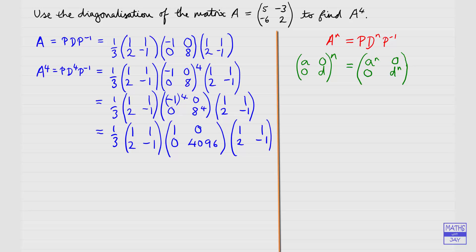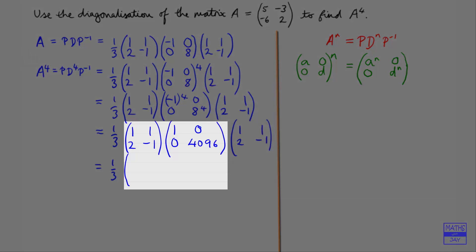Now we're ready to do some matrix multiplication. I'll multiply the first two matrices together first. The factor of one third stays out front. We get: (1×1 + 1×0) = 1, (1×0 + 1×4096) = 4096, (2×1 + (−1)×0) = 2, and (2×0 + (−1)×4096) = −4096.